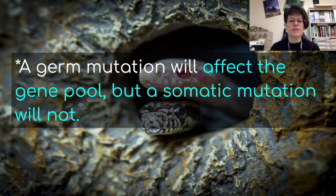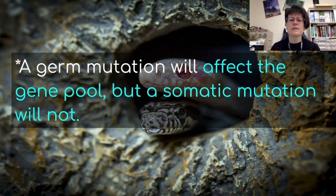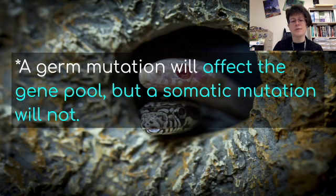A germ mutation will affect the gene pool, but a somatic mutation will not. For example, something like albinism — we have an albino snake in the background, and that is most likely a germ mutation. If it's a germ mutation, it can be passed on to offspring. But a somatic mutation, which occurs in the other body cells rather than the sex cells (sperm and egg), will not be passed on to its offspring.